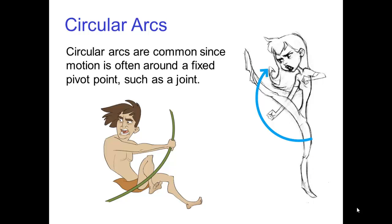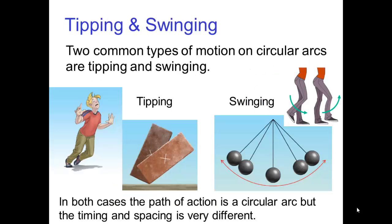Circular arcs are common since motion is often found around a fixed pivot, such as a joint. Two common types of motion on circular arcs are tipping and swinging.